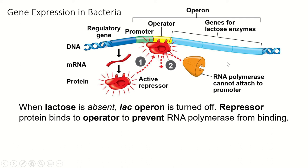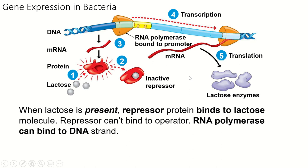That's what happens if lactose is absent. When lactose is present, lactose actually binds to the repressor protein. The repressor protein has a higher affinity for lactose than it does for the DNA, so it binds to the lactose. When we bind something to a protein, the protein changes shape. So when the repressor binds to lactose, it lets go of the operator and goes back into the cytoplasm of the cell.